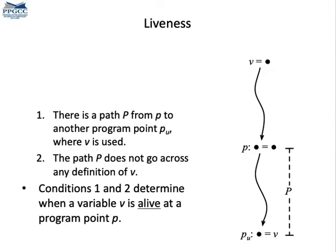We say that a variable, we will call it v, is alive at a certain program point p if there is a path from p to a program point where v is used. Along this path, we do not meet any redefinition of v.